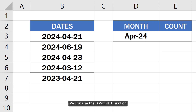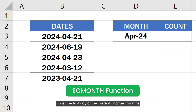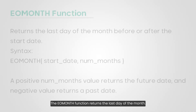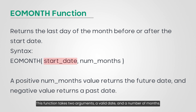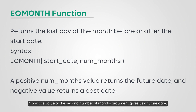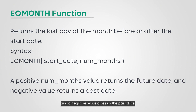We can use the EOMONTH function to get the first day of the current and next months. The EOMONTH function returns the last day of the month. This function takes two arguments: a valid date and a number of months. A positive value of the second argument gives us a future date, and a negative value gives us a past date.